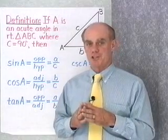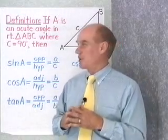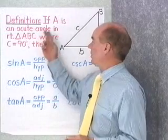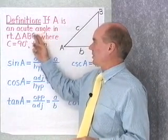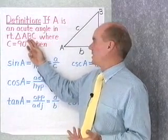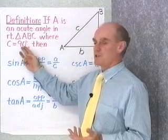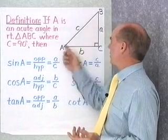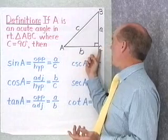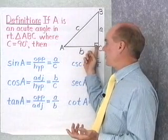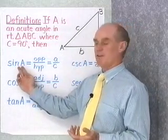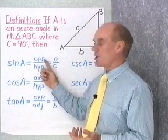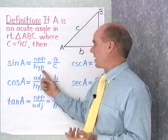Here's our second definition for the six trigonometric functions. This definition is in terms of a right triangle. If A is an acute angle in right triangle ABC where C equals 90 degrees, then the sine of A is defined to be the length of the side opposite angle A divided by the hypotenuse.